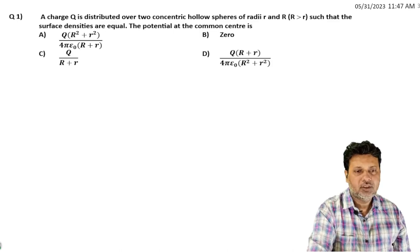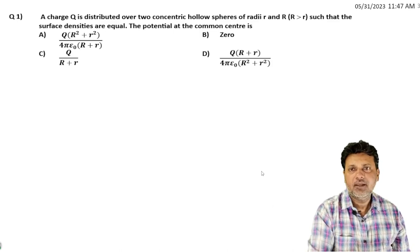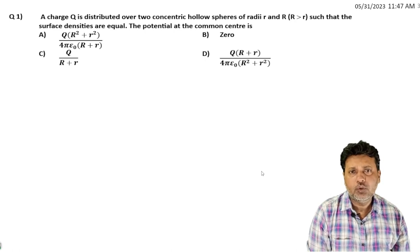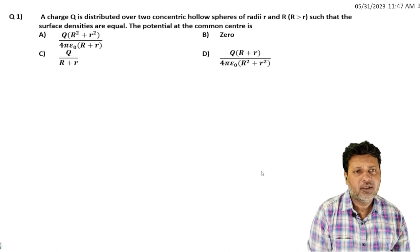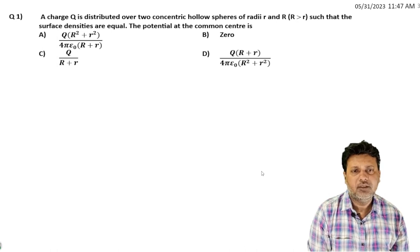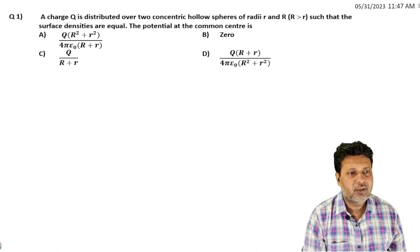A charge q is distributed over two concentric hollow spheres of radius r (smaller) and capital R, where capital R is greater than r, such that the surface densities are equal. Find the potential at the common center.